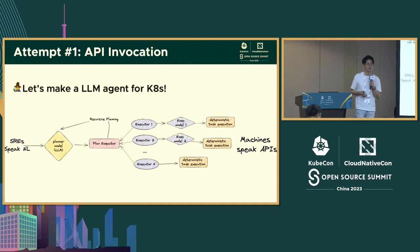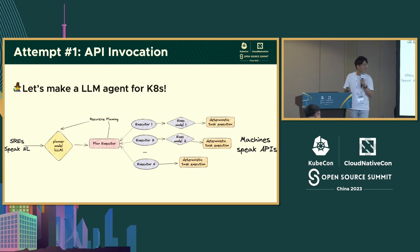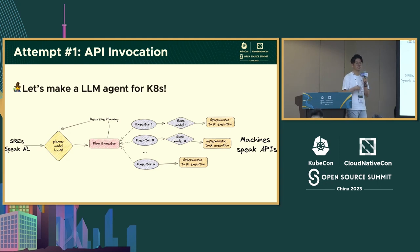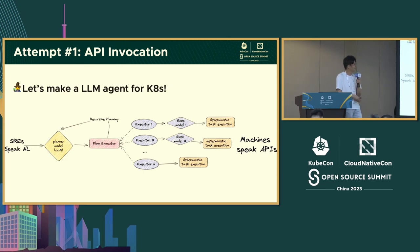The first attempt was about doing API invocation. By the time we had this idea, LangChain and AutoGPT were attracting everyone's attention, and everyone was talking about how to make an agent that learns to use tools to solve domain-specific issues. So we tried to make an agent that could solve Kubernetes issues. We drew a workflow: when an SRE expresses their intention in language, it goes through a planner model — a language model that plans the actions — and those actions are executed by different executors, each corresponding to a deterministic API call or function that interacts with the machines directly.